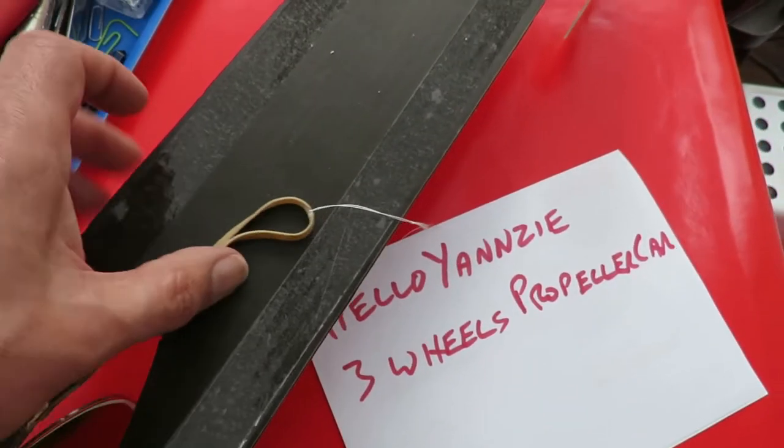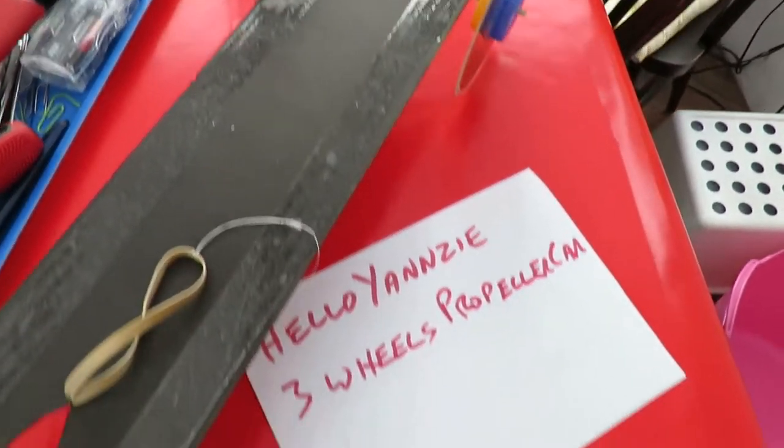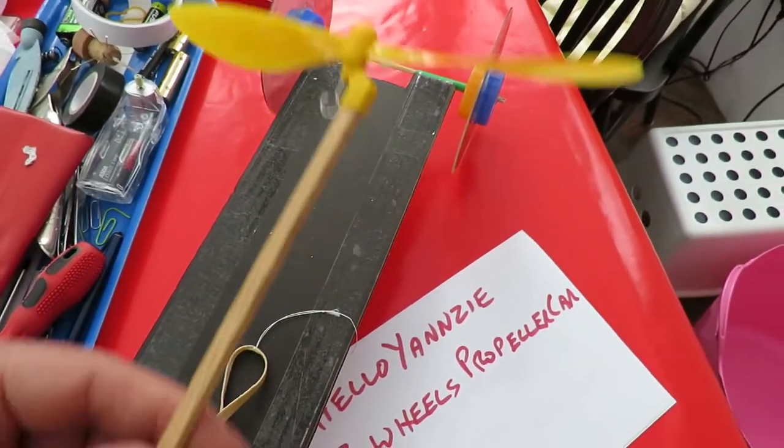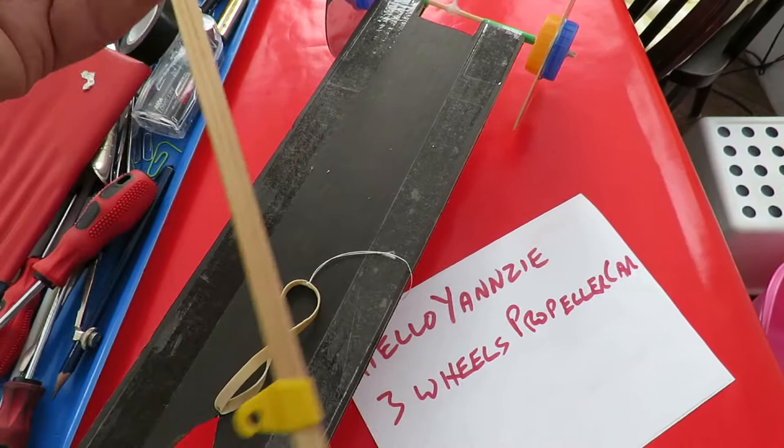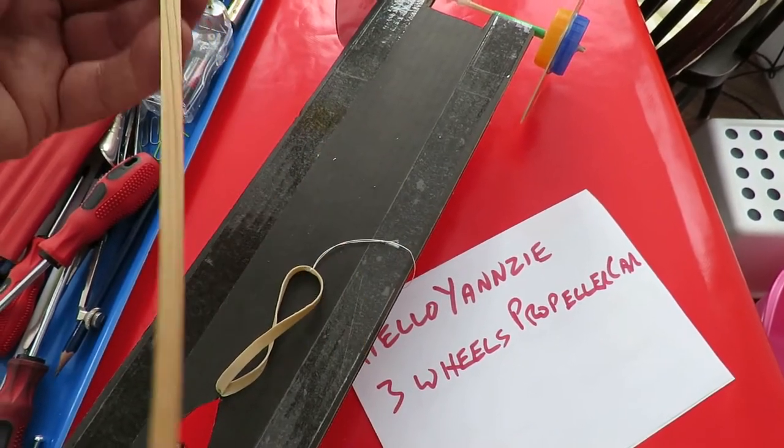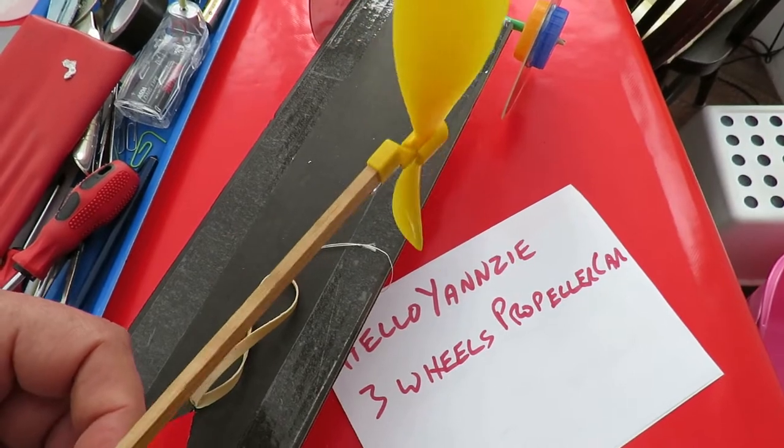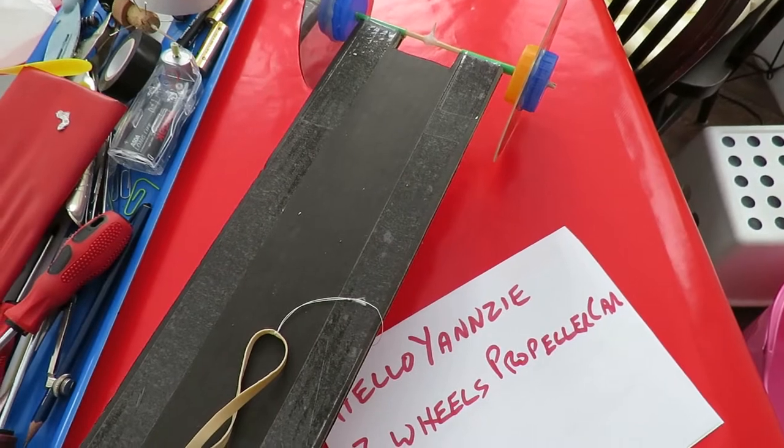So this one is still rubber band powered and I'll demonstrate that working and then I'll convert it to propeller power. I've got this propeller and fuselage body stick off of one of my old rubber band powered plane kits and we'll stick that on top and make it rubber band propeller powered.